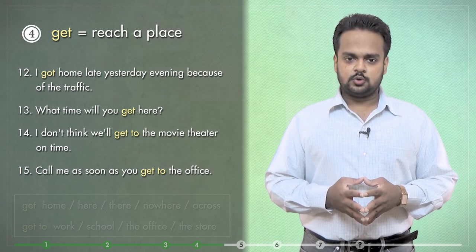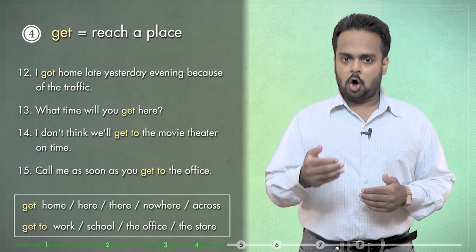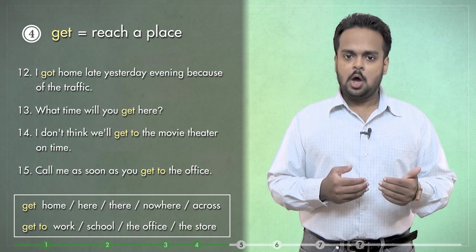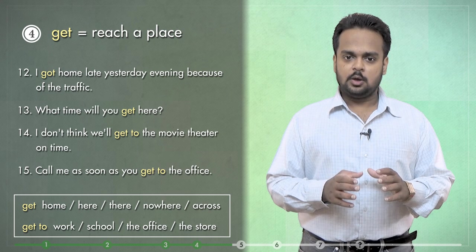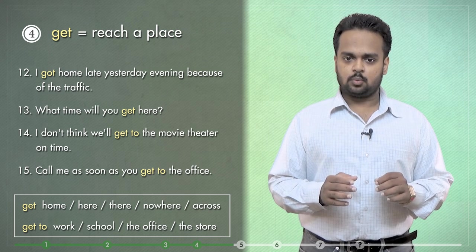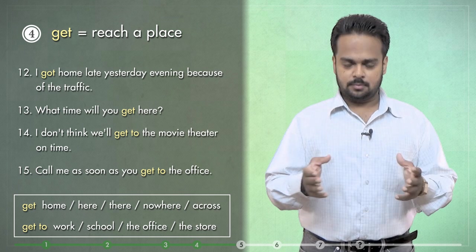Notice that in the first two examples, after get, we have adverbs – home and here. OK, because they're adverbs, we don't use to. But in the last two examples, we use to because we have nouns – the movie theatre and the office. Remember that.